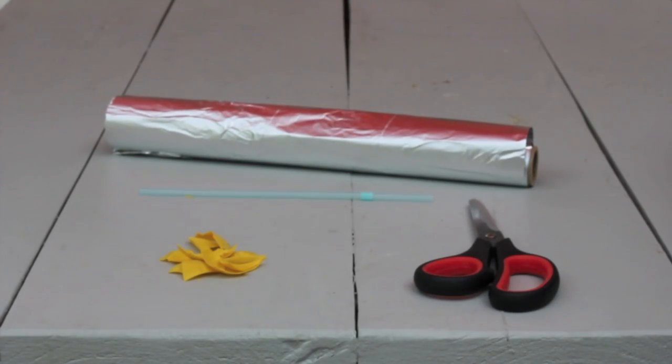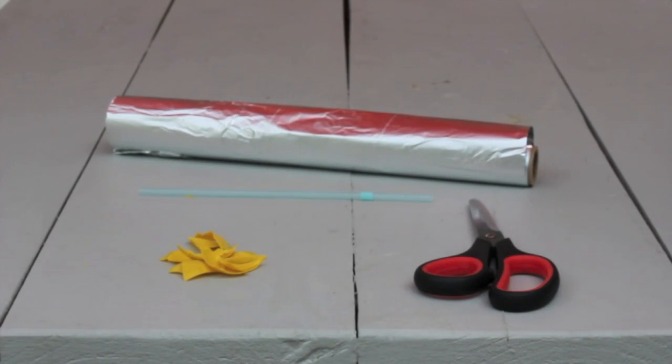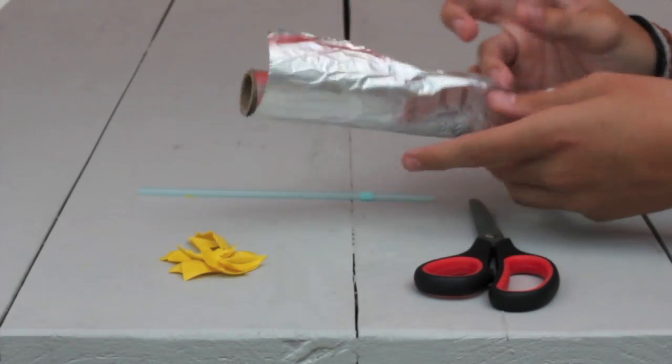The next step is to make a bowl out of the tin foil. My assistant here will do that for me.